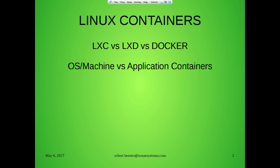OS machines versus application containers: OS machines is Google terminology — they like calling them machine containers. The largest implementation is actually through Linux containers, Ubuntu Canonical. Google uses it but doesn't say it's Canonical — they just call it machine containers. We don't care. We have a problem, it has a means of solving the problem. I'm talking from the point of view of creating something from the ground up or trying to understand what's going on.